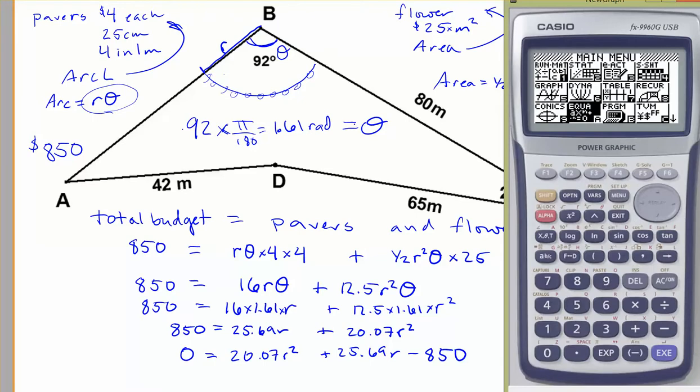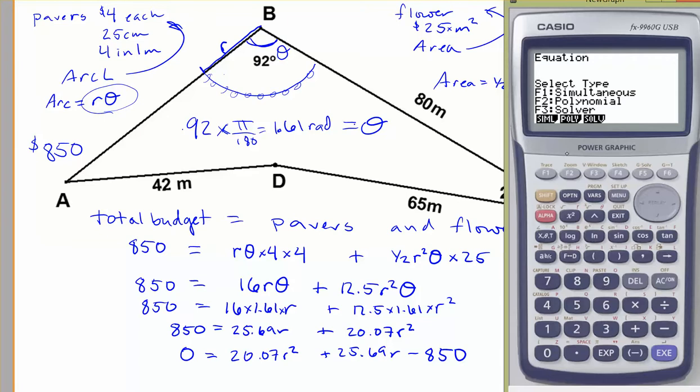So again, you're going to equation solver, wherever that is in your calculator, from the main menu, and polynomial for F2. Or you could be using the quadratic equation here. My degree is a second degree polynomial because it's an r². So we're going to select 2.